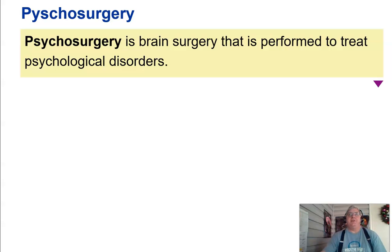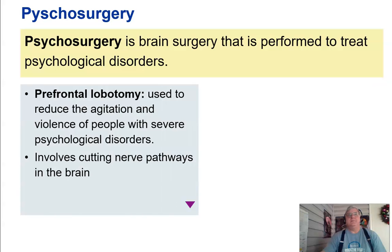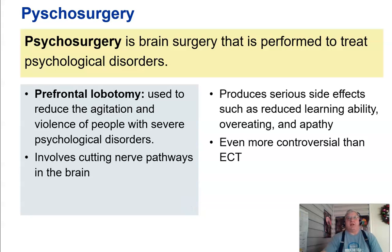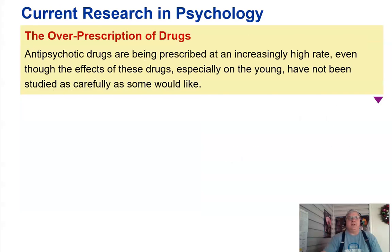Psychosurgery is brain surgery performed to treat psychological disorders. The most famous is the prefrontal lobotomy, used to reduce agitation and violence in people with severe psychological disorders by cutting nerve pathways in the brain. It produces serious side effects such as reduced learning ability, overeating, and apathy. Even more controversial than electroconvulsive therapy, the prefrontal lobotomy is nowadays generally considered unethical — it can still be used but is not recommended.